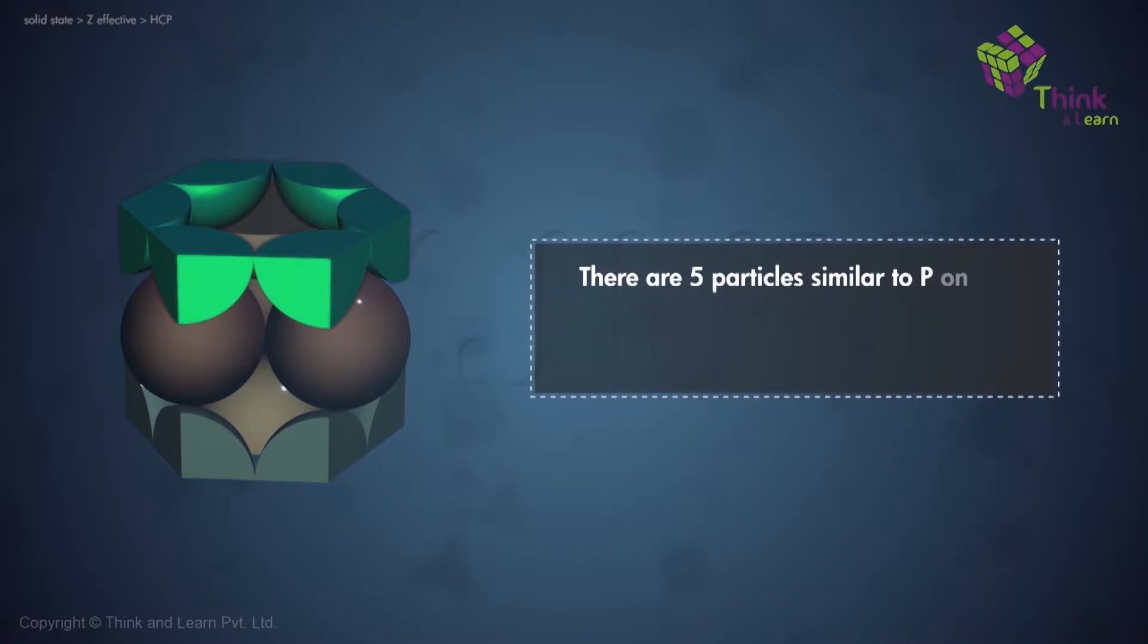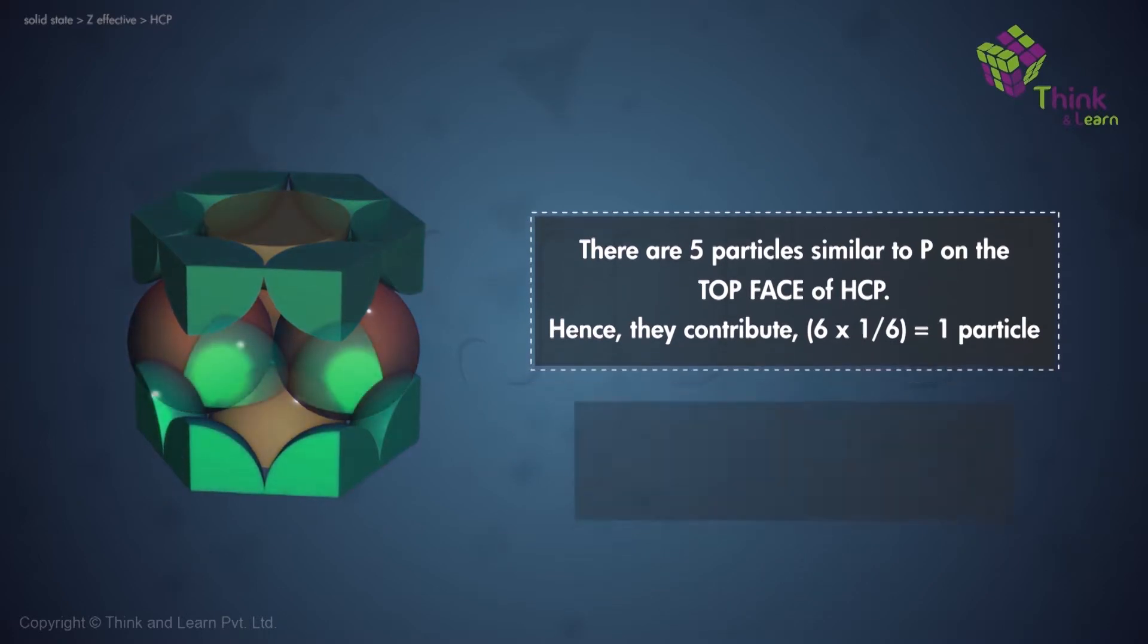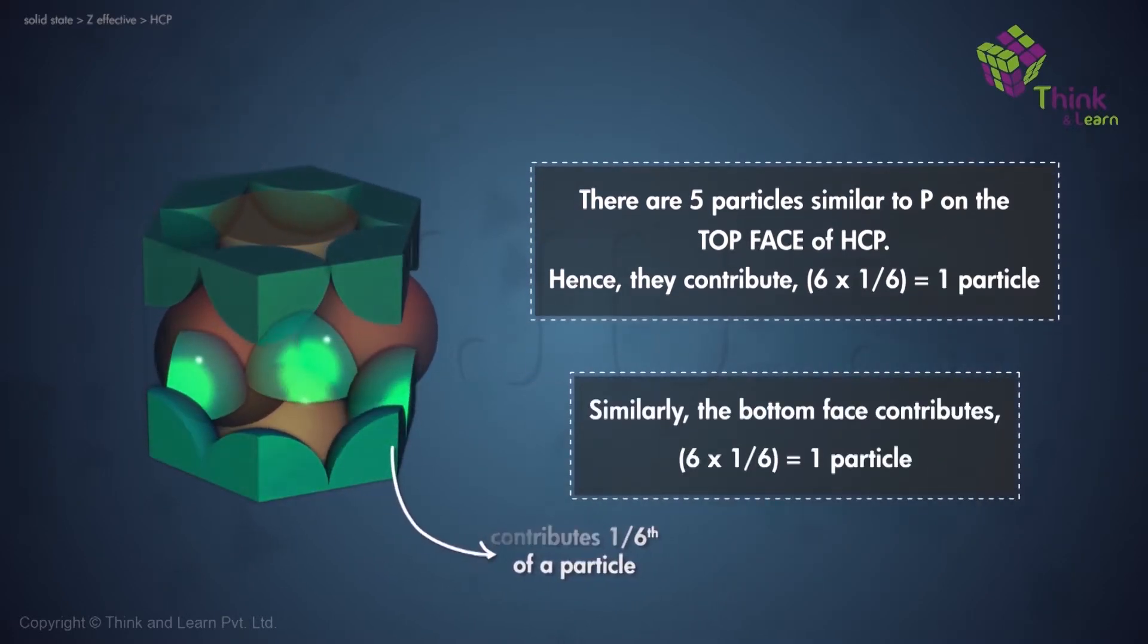Now, on the top face of the hexagon at the corners, there are six such particles. So therefore, these particles similar to P give six into one by six, which is one particle for unit cell U1. Similarly, the bottom face will contribute one more particle, six into one by six over there as well.